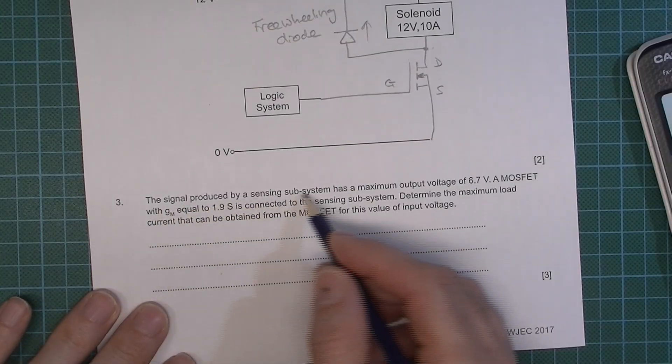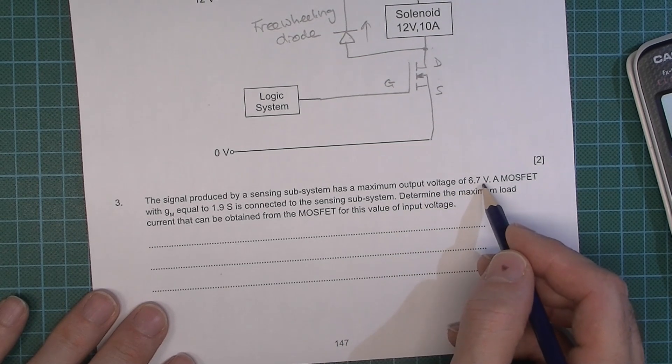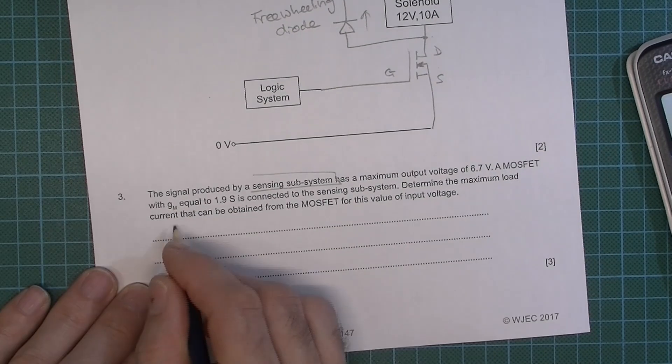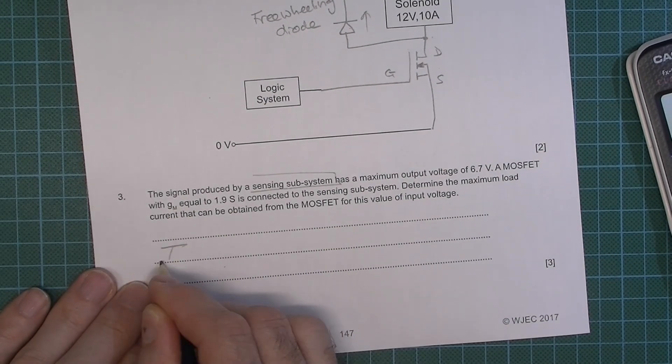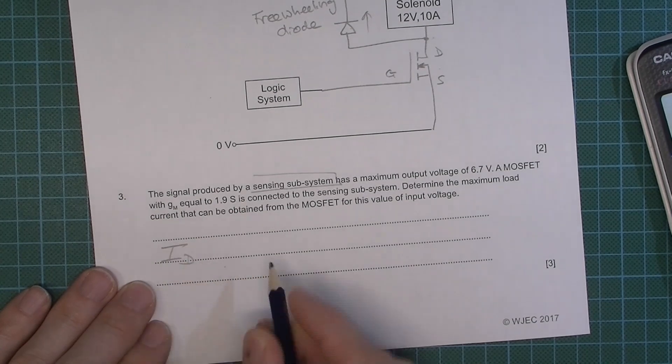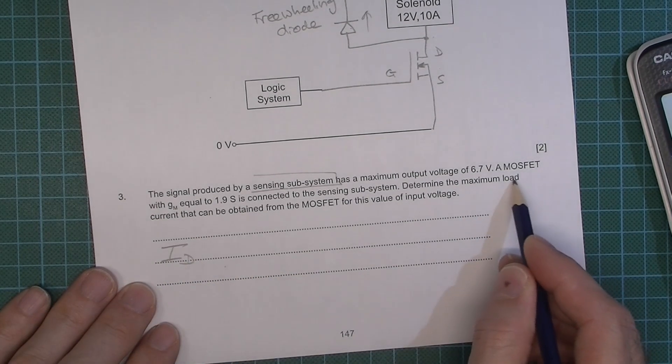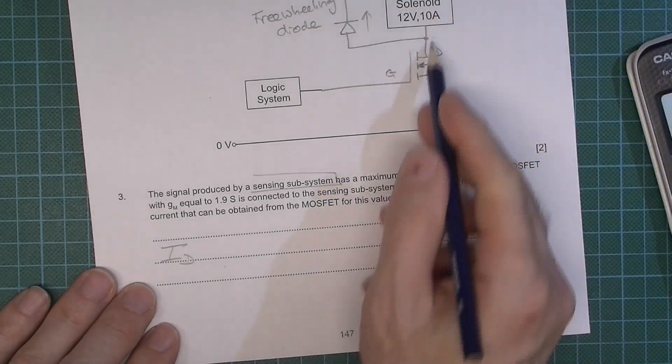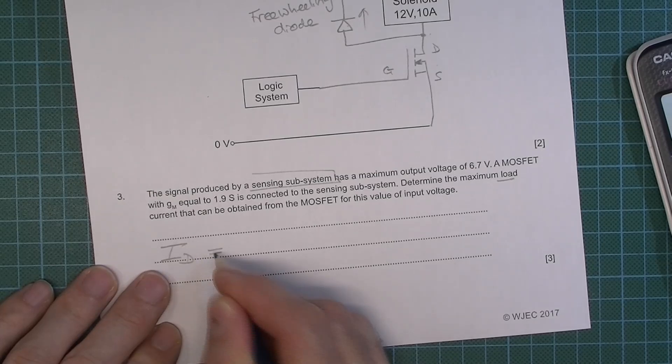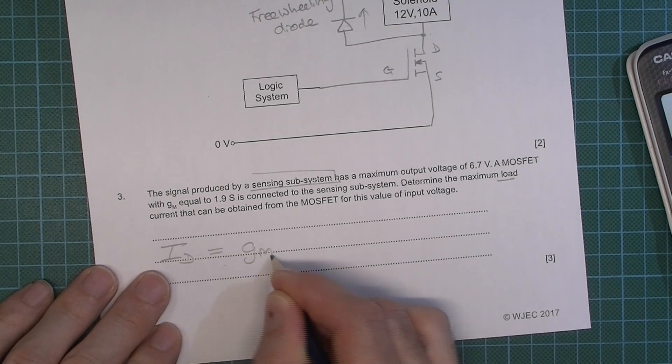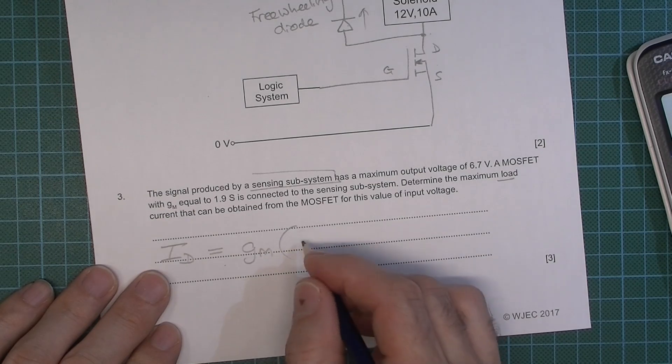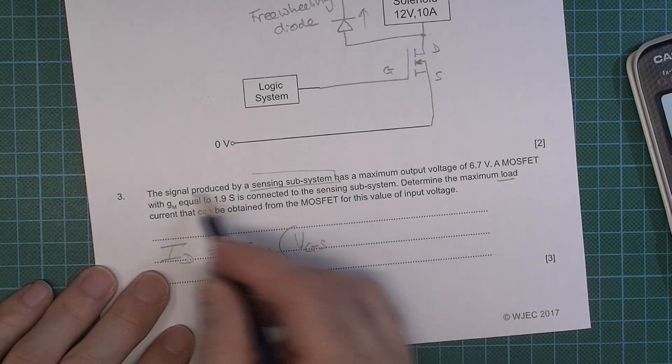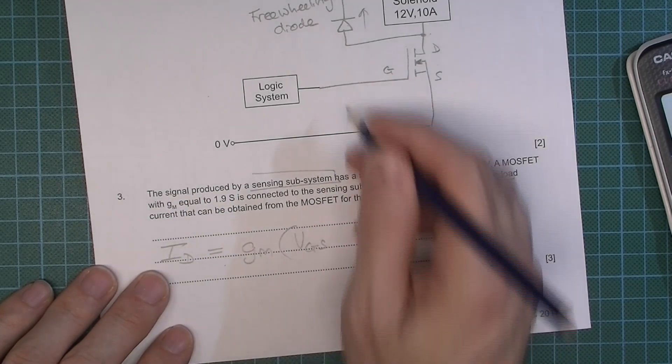Next question. Signal produced by a sensing subsystem has a maximum output voltage of 6.7 volts. Determine the maximum load current that can be attained. Do this quite easily. I might even draw you a little circuit in a minute. But the drain current because that's the load current. The drain current. Remember this is the load here so it's just above the drain. The drain current is going to be equal to the mutual transconductance multiplied by the voltage VGS which is the signal. Okay this by the way.